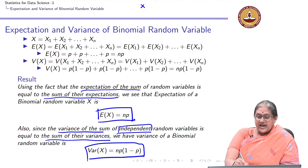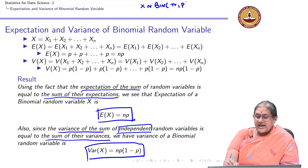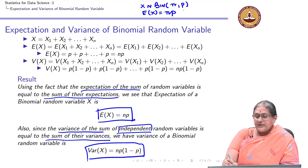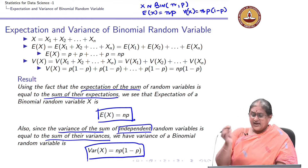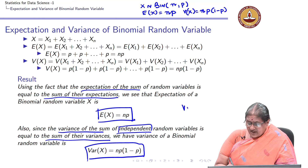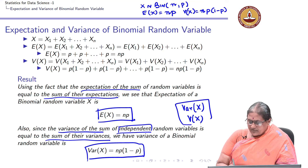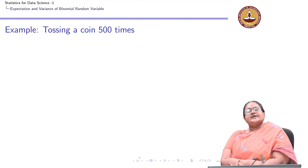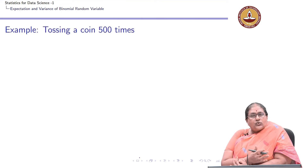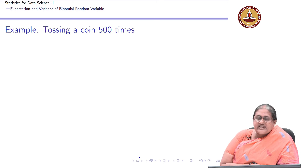In summary, if X is a binomial random variable with parameters n and p, the expectation of X is n times p and the variance of X is n times p times (1 minus p). The key results used are: expectation of sum is sum of expectations, and for independent random variables, variance of sum equals sum of variances. Now let us look at a few examples.